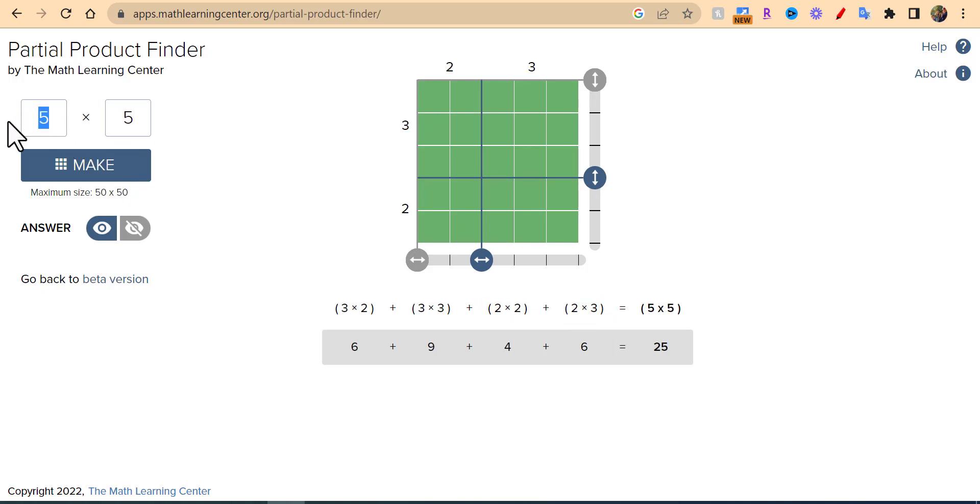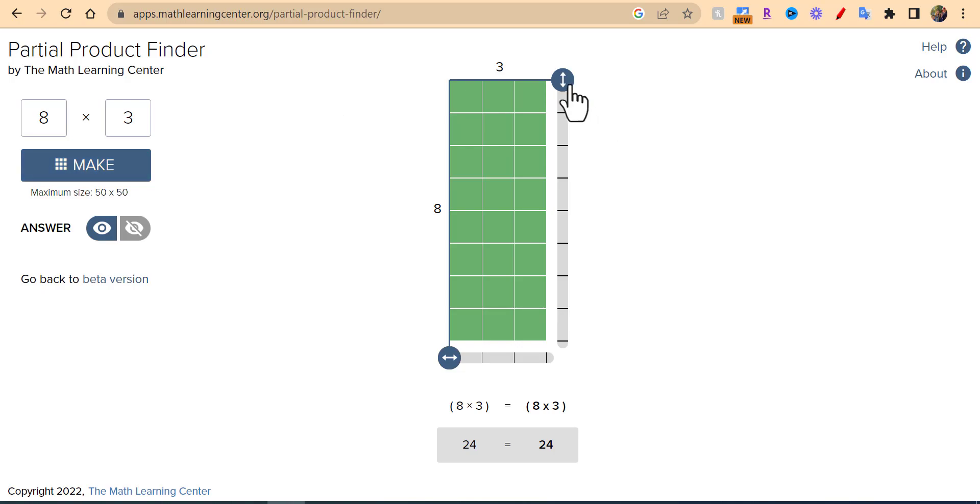You could also say we wanted to have 8 times 3, so let's go ahead and make it. Of course you can drag that down. You could remove the ability to see, so just select right in here.